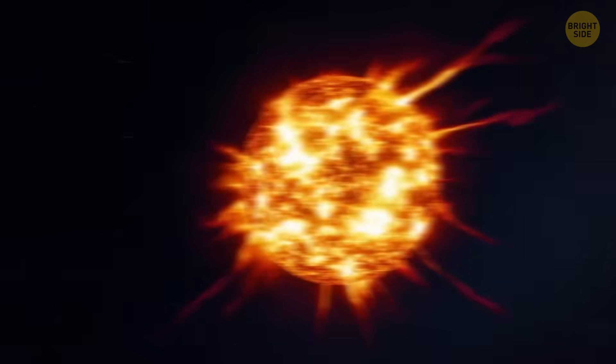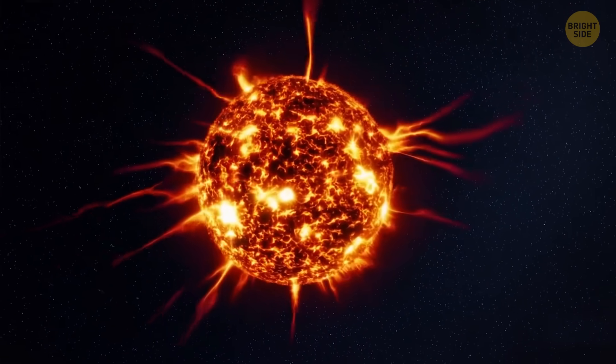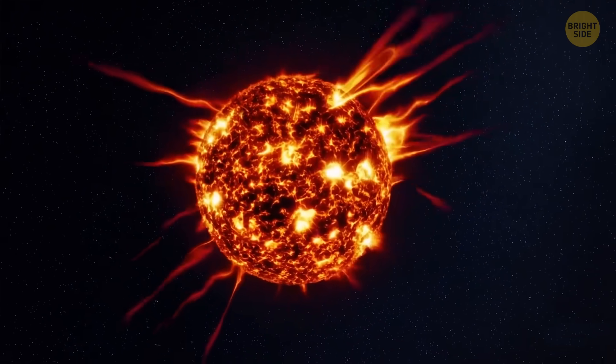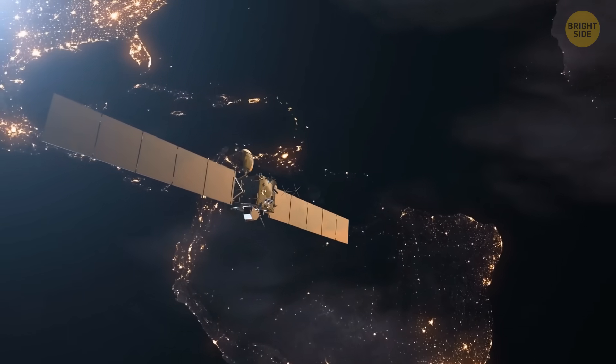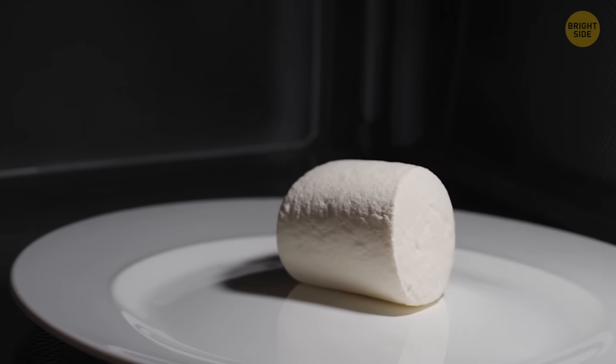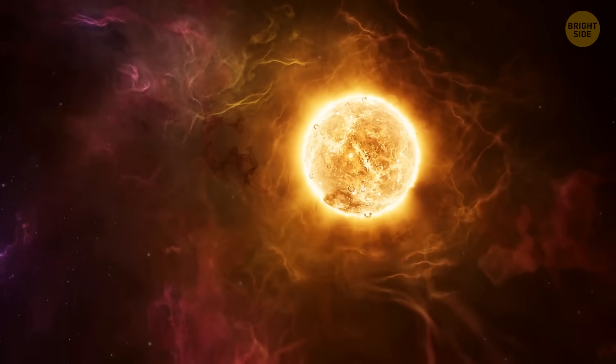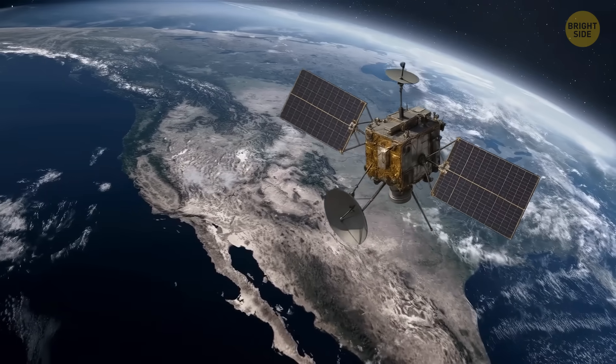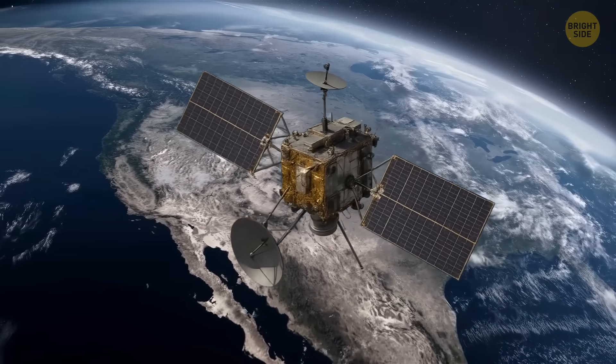You might be wondering right now, why should I care? Well, because when the Sun freaks out, it messes with our stuff, especially in space. Satellites get dragged out of orbit because Earth's upper atmosphere literally puffs up like a marshmallow in a microwave when solar activity spikes. And this has already happened to a few spacecraft recently.